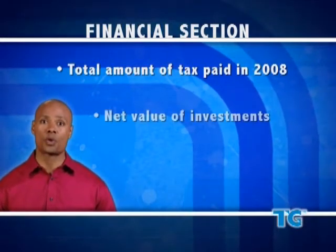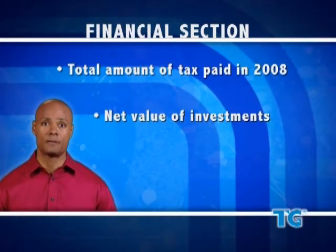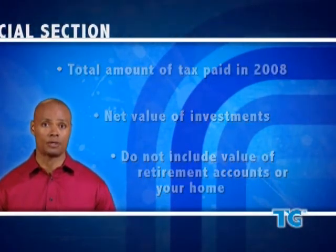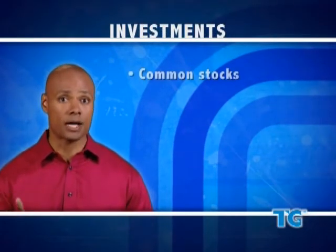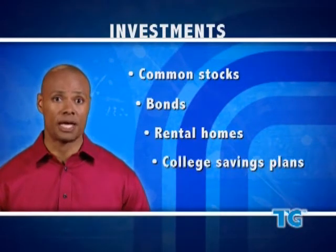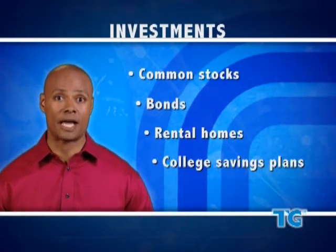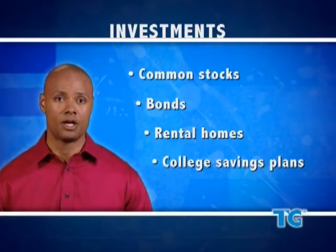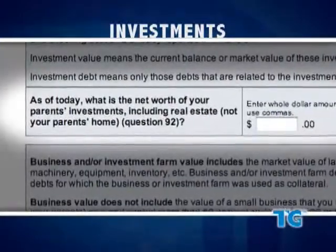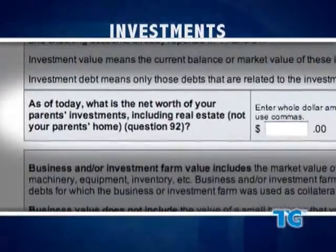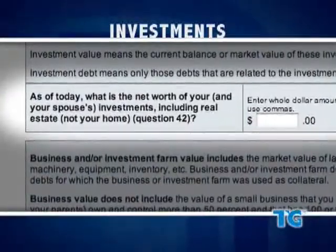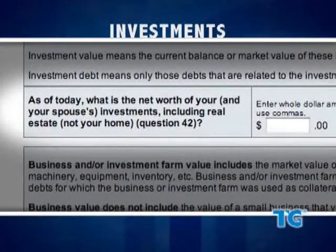You will also be asked to provide the net worth of any of your investments. But these do not include any retirement accounts you may have or the value of your home. Some examples of investments include stocks, bonds, rental homes, 529 college savings plans, and refund value of 529 prepaid tuition plans. For students reporting parents' income, these accounts are reported as the parents' investments in question 92. For a student who isn't reporting parents' income, these savings plans are included in question 42. It's important to let it be known who holds which investment.